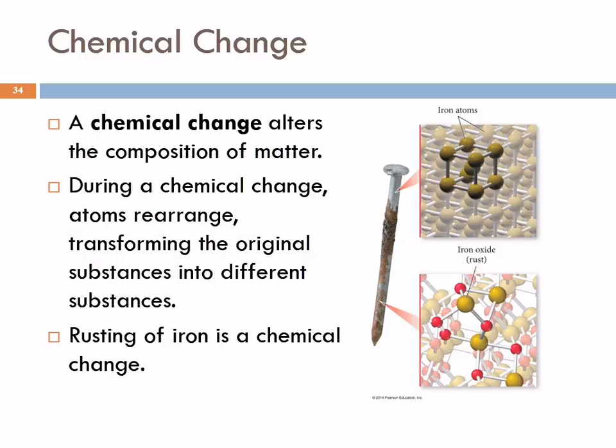We also see evidence of this in that the color of the metal changes and its physical characteristics change. Rust is not very strong. If you have a very rusty nail and try to pound it into a piece of wood, it might just break in half. So in a chemical change, we have atoms rearranging or transforming into other substances. It's a chemical change.